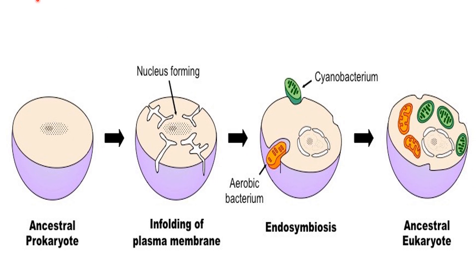The engulfed prokaryotic cells remained undigested as they contributed new functionality to the engulfing cells — for example, photosynthesis. Over generations, the engulfed cells lost some of their independent utility and became supplementary organelles. Hence, endosymbiosis theory attempts to explain the origin of organelles — chloroplasts and mitochondria — in eukaryotic cells.